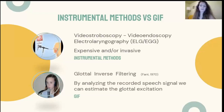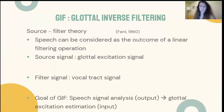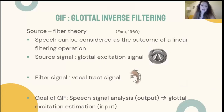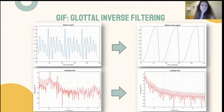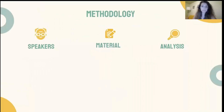Alternatively, measurements directly from the glottal airflow velocity signal of recorded speech can be made using GIF. Glottal inverse filtering is heavily based on the source-filter paradigm introduced by Fant, where speech is considered as the outcome of a linear filtering operation, with the source signal being the glottal excitation signal and the filter being the vocal tract. GIF introduces the idea of inversion, according to which the effects of vocal tract and lip radiation are cancelled from the speech signal, allowing us to estimate the glottal excitation. The usefulness of GIF in pathological speech analysis has been demonstrated in the literature; however, GIF analysis is not trivial to perform from scratch and is not included in most commercial or freely available speech analysis software.